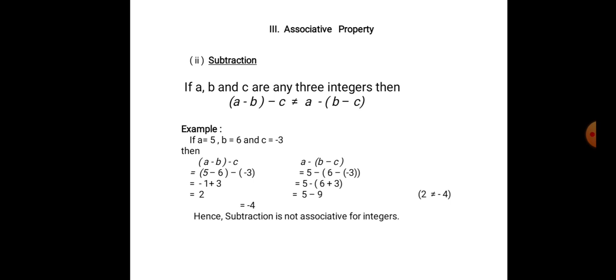6 minus of minus 3 is 6 plus 3, which is 9. So 5 minus 9 is minus 4. On the left hand side we get minus 4. For the right hand side, (a minus b) minus c gives 2, which is not equal to minus 4. Hence, left hand side and right hand side are not equal. Therefore, subtraction is not associative for integers.